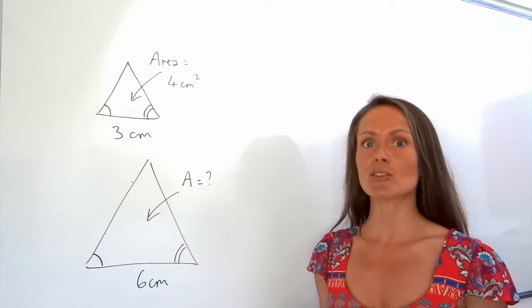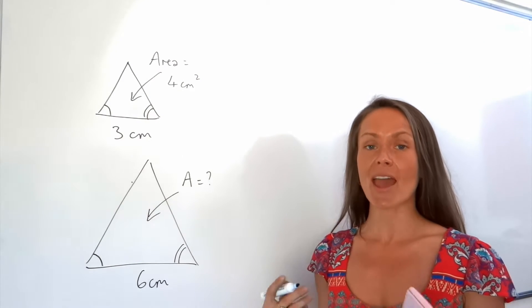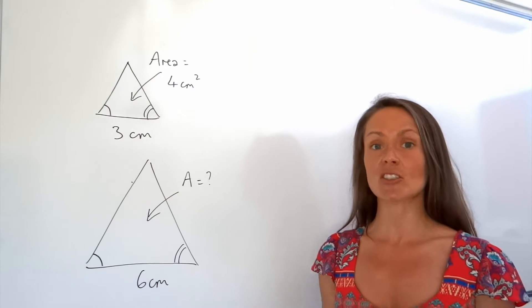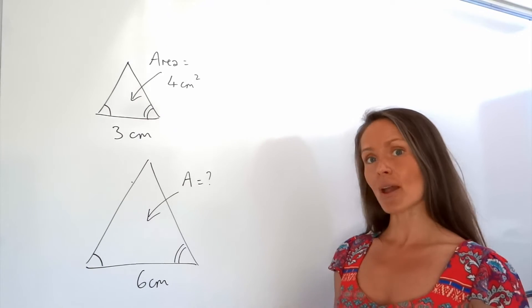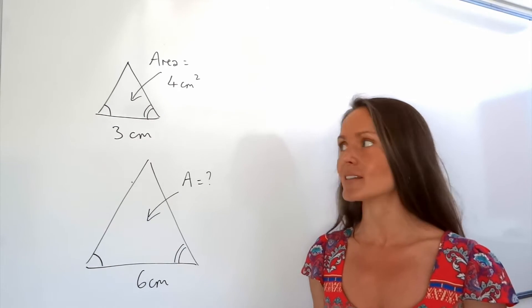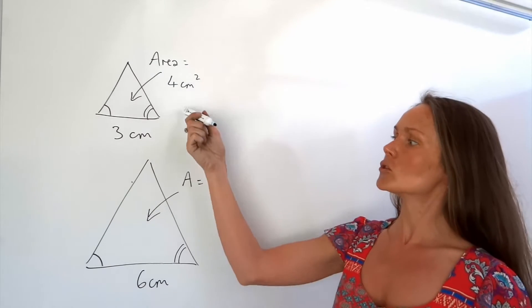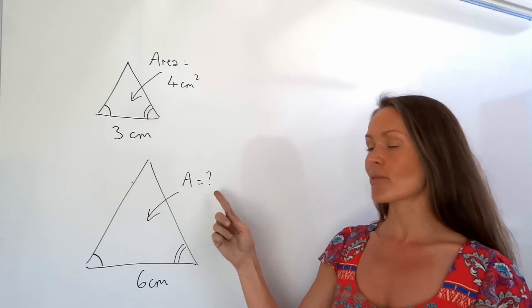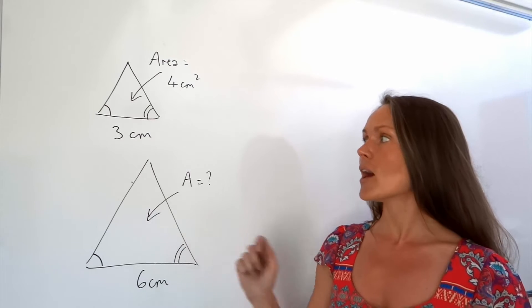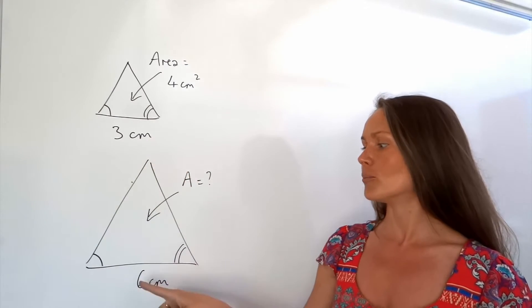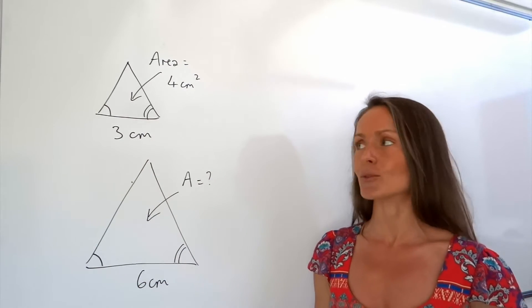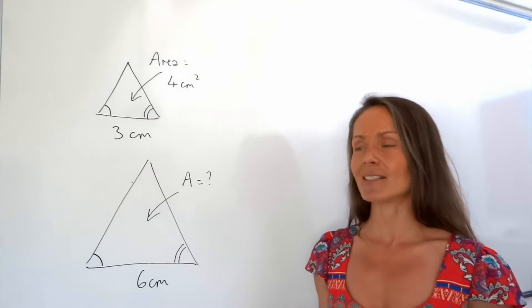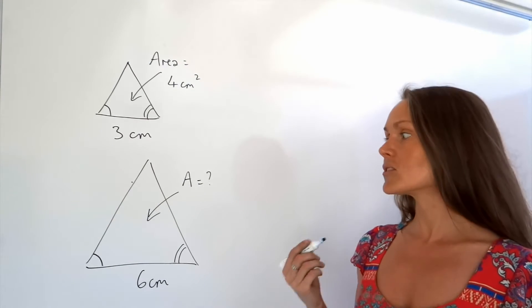In this video I'm going to show you area of similar shapes. Similar shapes are just the same shape — they have the same angles but they're different sizes. Here I've got two similar triangles and I need to work out the area of the larger triangle. I know the length of both of the bases, just like in my previous video on similarity when we're finding lengths.